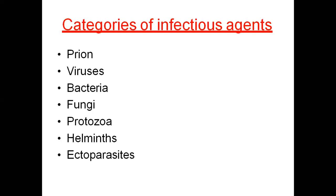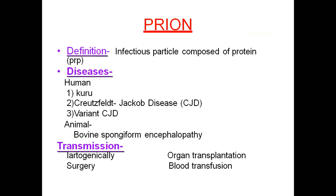Now we look at the definition of prions. Prions are infectious particles composed of a specific protein sequence that spreads in the body. Diseases transmitted via prions include Kuru, Creutzfeldt-Jakob disease (CJD), and variant CJD.